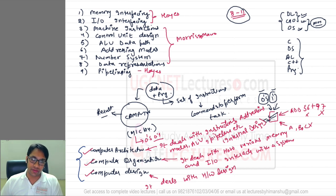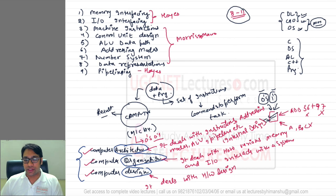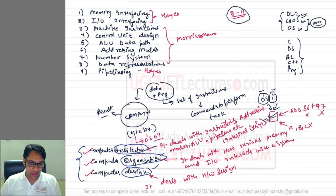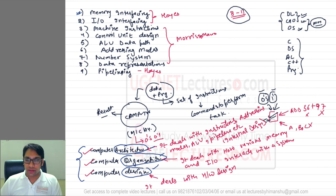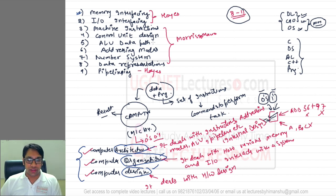There are multiple names for this particular subject, but the common elements are either architecture and organization, organization and design, or architecture and design — so these three terms will be common in the subject name. We'll start with the first topic, memory interfacing, and slowly cover all these topics one by one, step by step.